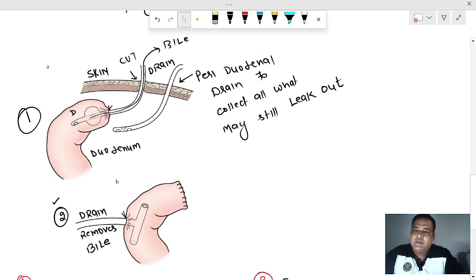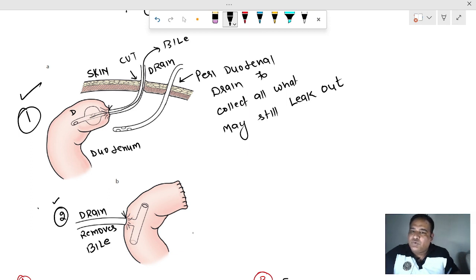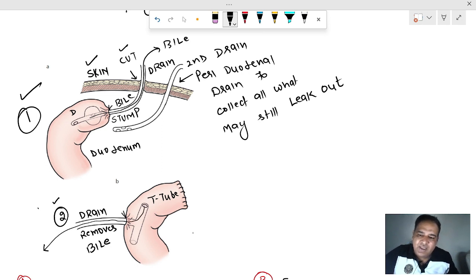This one and two, the two different methods. One is, you insert drain through the skin, give a cut in the skin, insert a drain directly through the stump. It will remove all the bile out. You will insert a second drain that will remove all the bile which has leaked out. The second way is you insert a drain, a T-tube. You insert it into the duodenum. That will also function in the same way. It will remove the bile and it will allow the healing to occur.